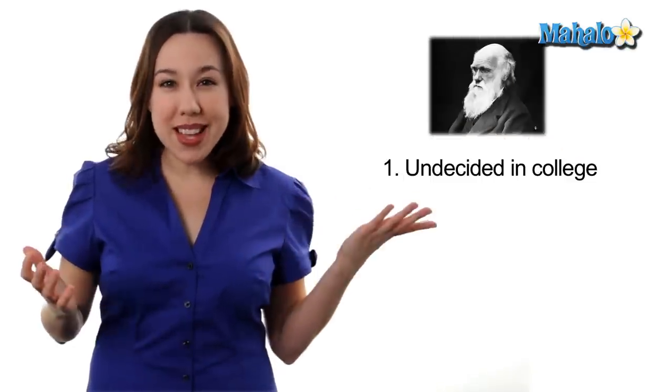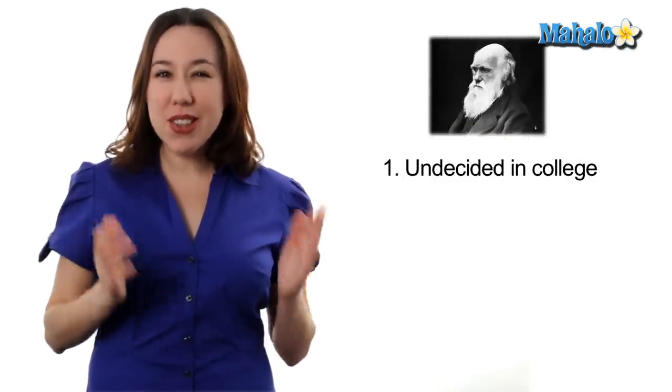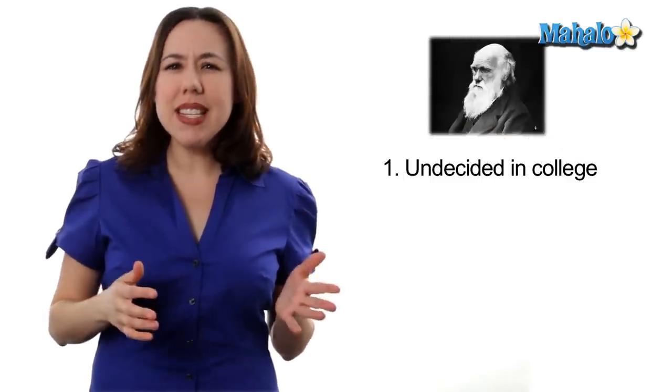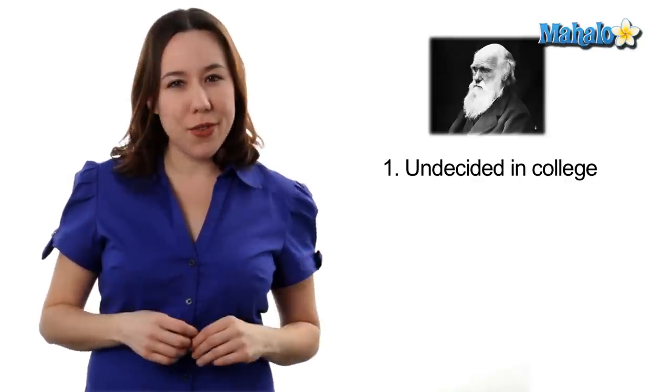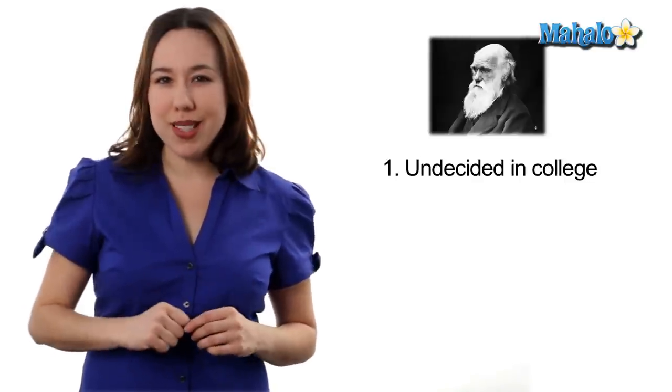Number one, Darwin was undecided about college too. He started out as a doctor but then decided maybe he wanted to be a clergyman. Well, we all know, lucky for us, that he decided to be a naturalist.